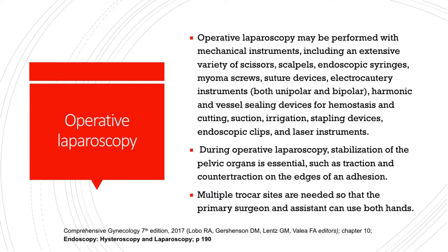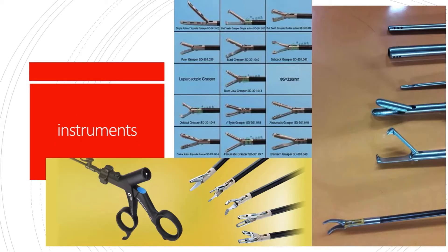Operative laparoscopy may be performed with mechanical instruments such as scissors, scalpels, endoscopic syringes, myoma screws for myomectomy, suture devices, electrocautery instruments both unipolar and bipolar — in gynecology we prefer bipolar — harmonic and vessel sealing devices for hemostasis and cutting, suction, irrigation, stapling devices, endoscopic clips, and laser instruments if available. Stabilization of the pelvic organs through traction and counter-traction is essential, and multiple trocar sites are needed so the surgeon and assistant can use both hands. These instruments include a variety of graspers and the bipolar electrosurgical instrument.